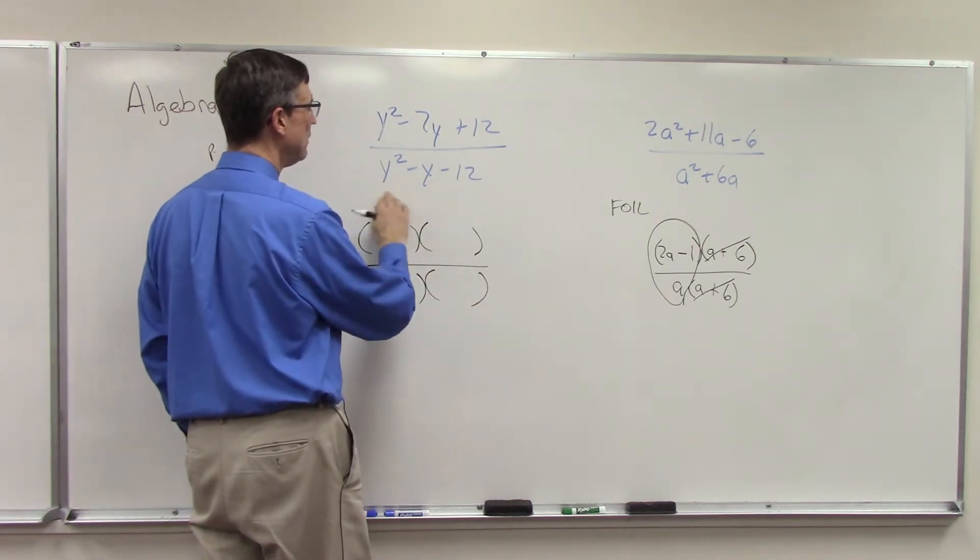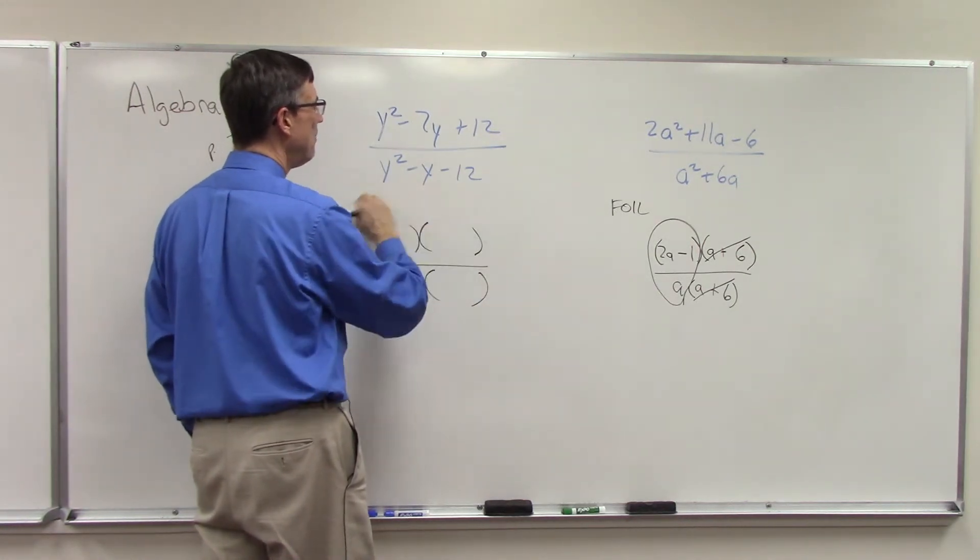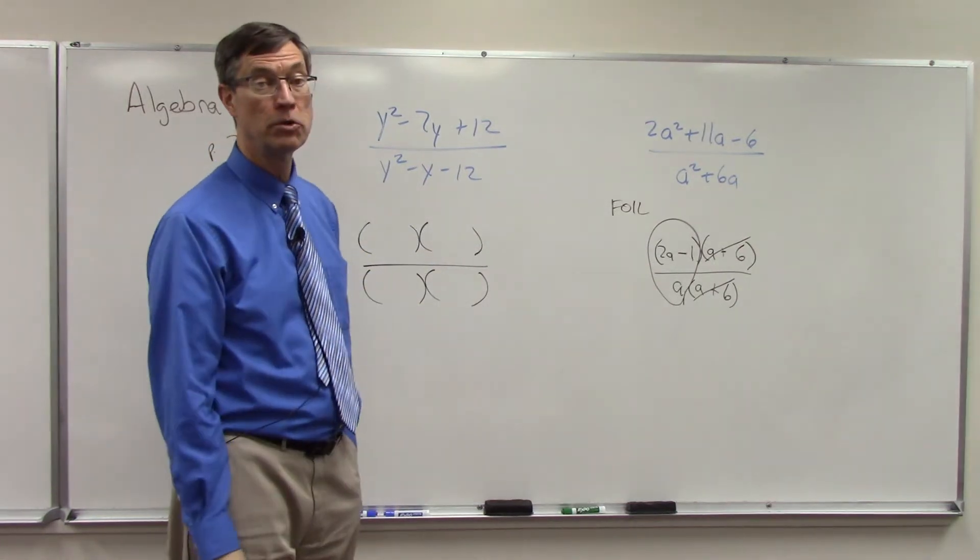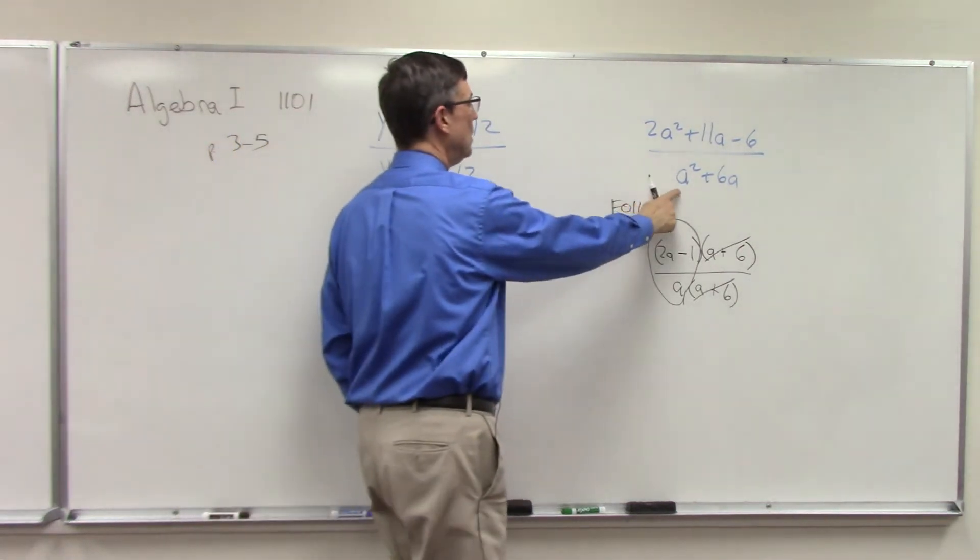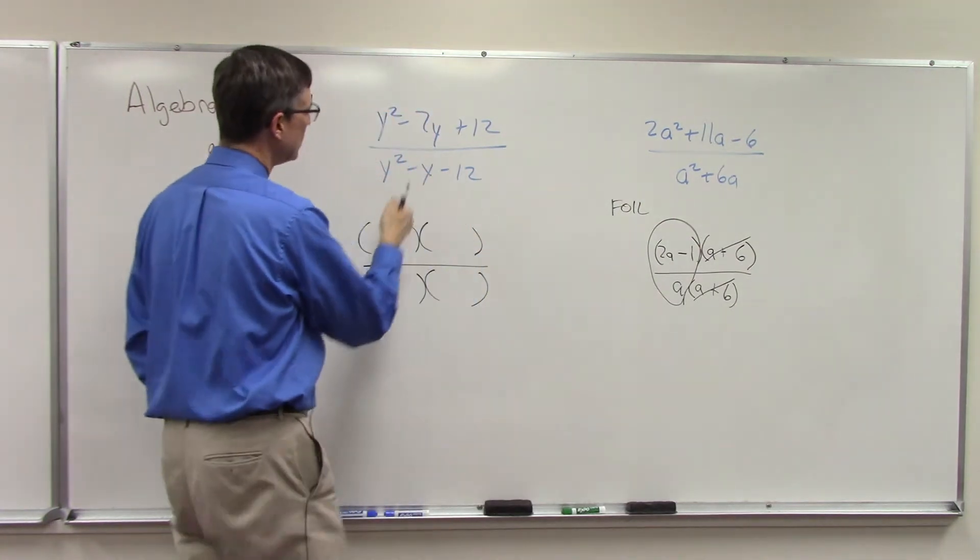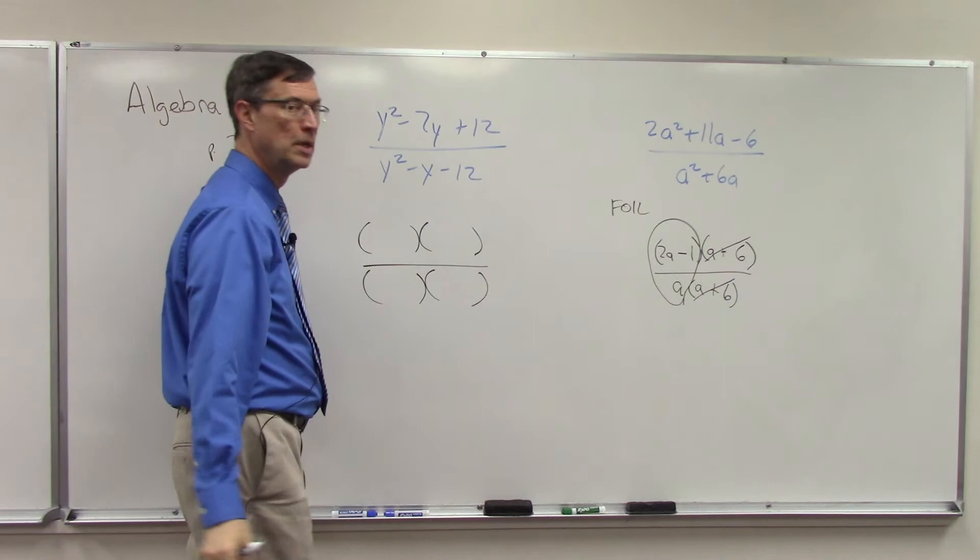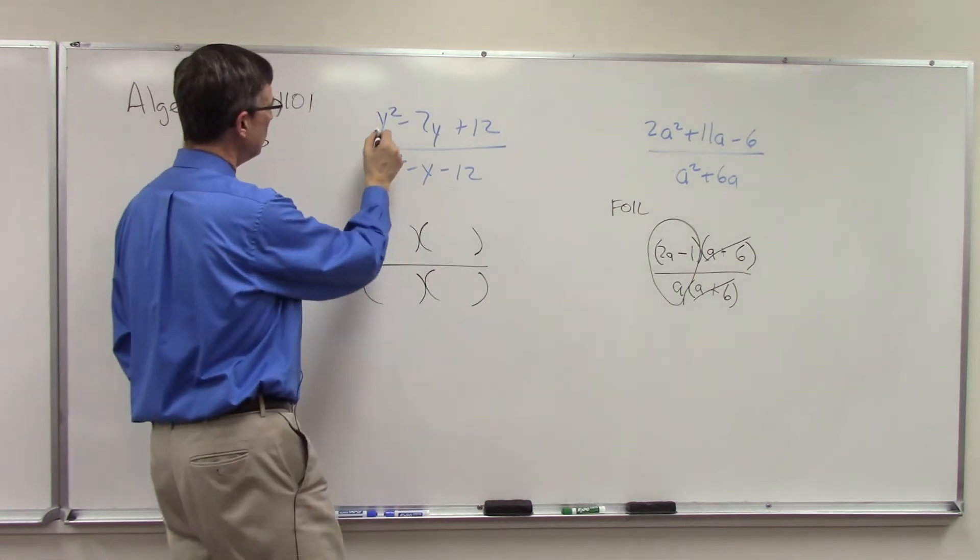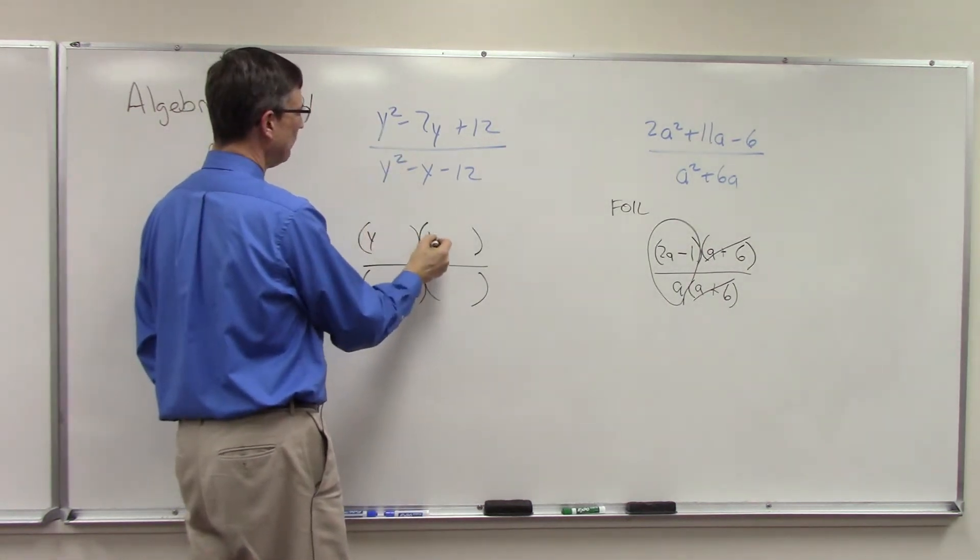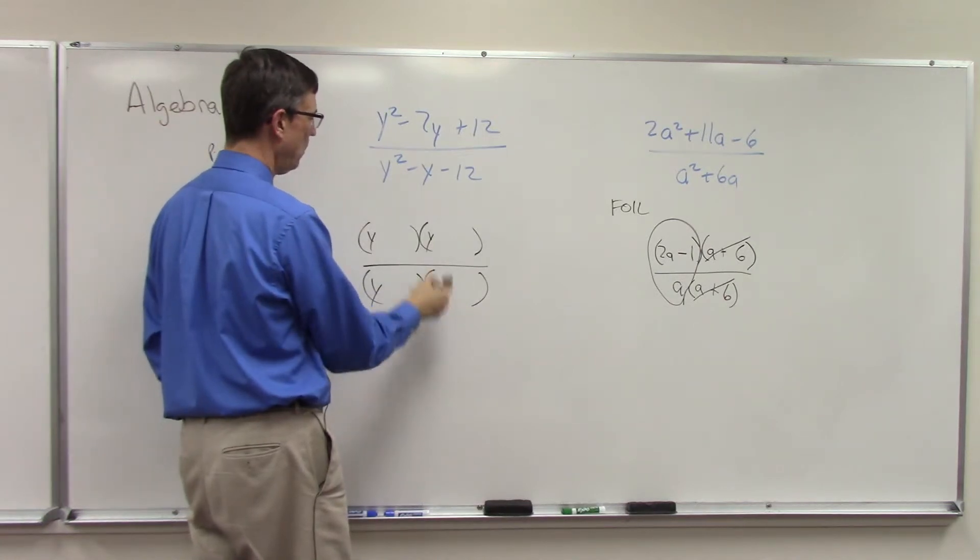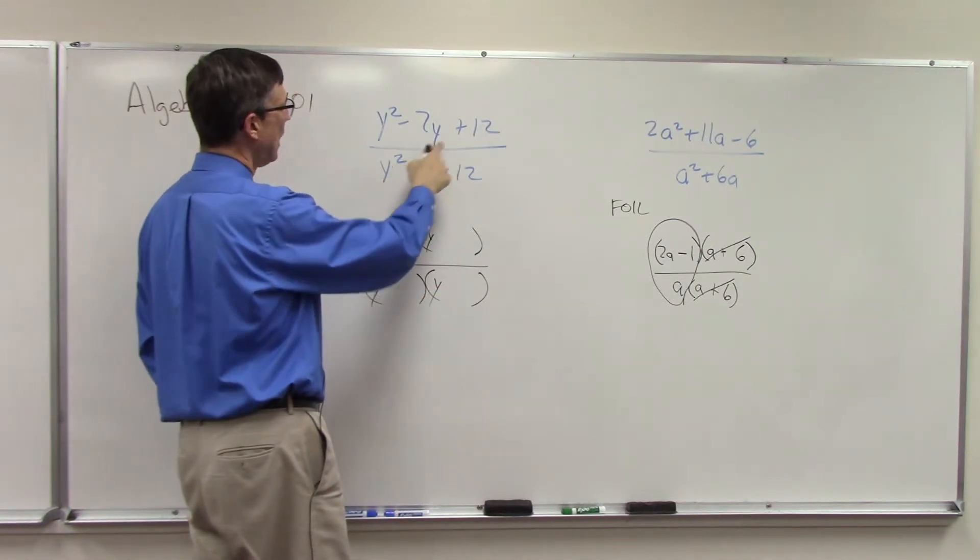Let's just set it up. We're going to factor this into two parentheses, factor this into two parentheses, because I don't have any factor that will come out of every term in either the numerator or the denominator, like I did here. So I can't factor anything out, but I can certainly factor it using reverse FOIL method.